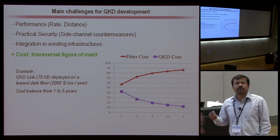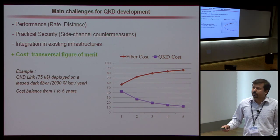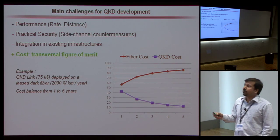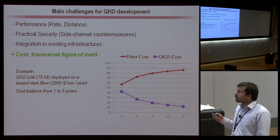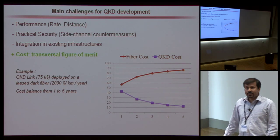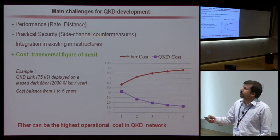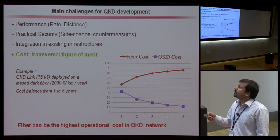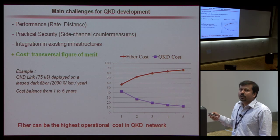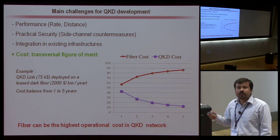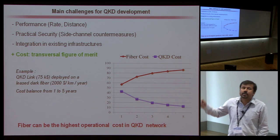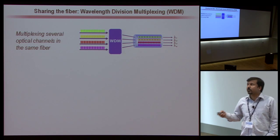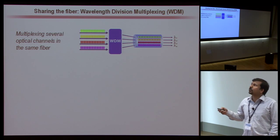Consider a QKD link — a QKD system that costs $75, for example — that uses a dark fiber which is leased for around $2,000 per kilometer per year. You can see that the fiber gives the highest operational cost for a QKD network. So the solution is to share the fiber using a technique called wavelength division multiplexing, multiplexing several optical channels in the same fiber.